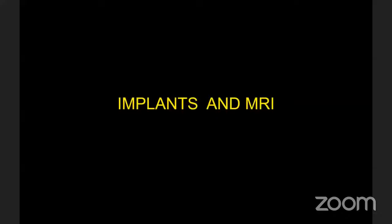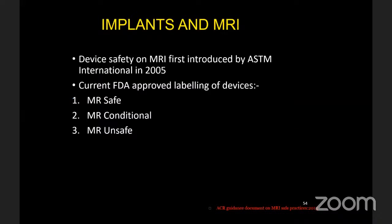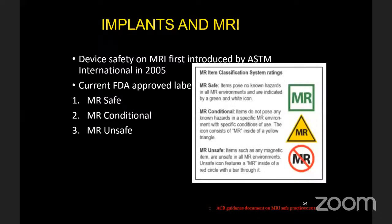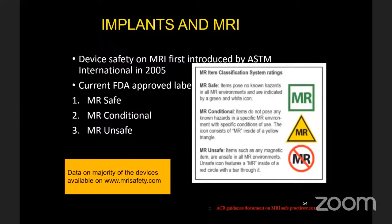Regarding implants and MRI: device safety in MRI was first introduced by ASTM International in 2005. Three categories are defined: MR safe, MR conditional, and MR unsafe. Data on most devices is available at www.mrisafety.com. If the device is MR safe, proceed without issue. If MR conditional, follow specific conditions of use. If MR unsafe, it cannot be used. These categories are color-coded: green for MR safe, yellow for MR conditional, and red for MR unsafe.